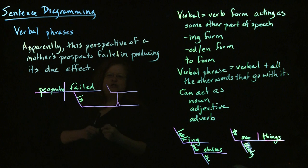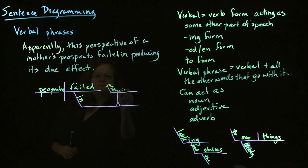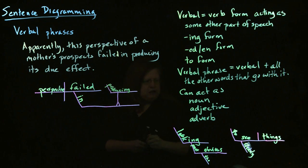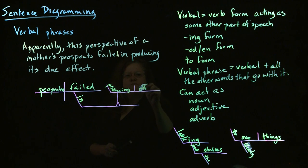In this case, we have an ing verb. So, we know it goes around the corner. Here, producing. And then, it has a direct object. Its due effect. So, effect is our object.